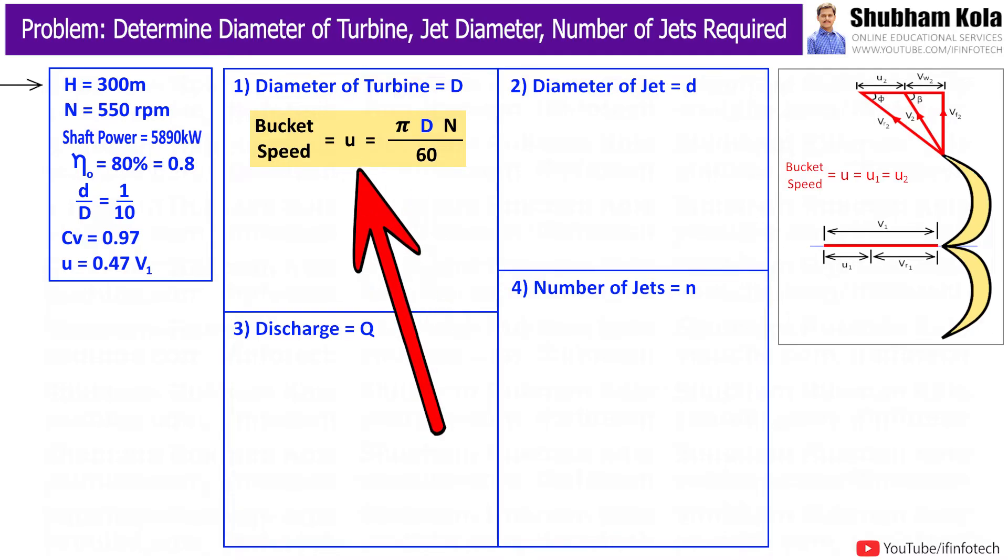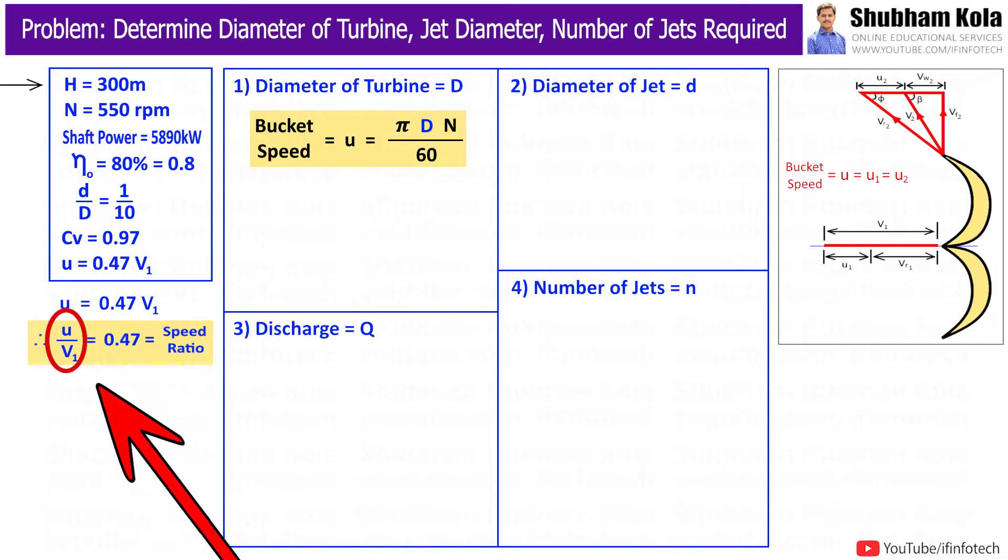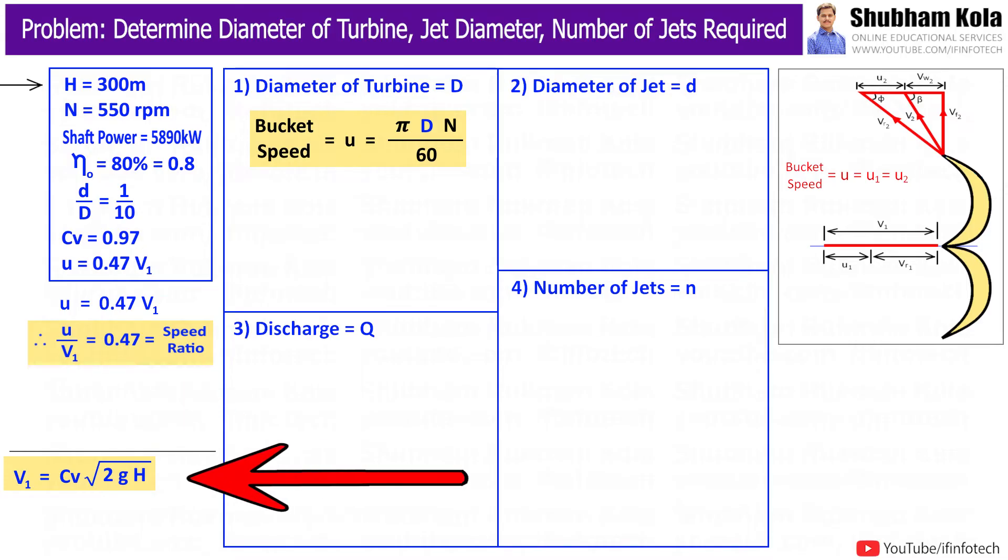For the value of u, we have speed ratio, that is bucket speed by velocity of jet. To calculate velocity of jet of turbine, V1 is given by formula CV multiplied with square root of 2gH.